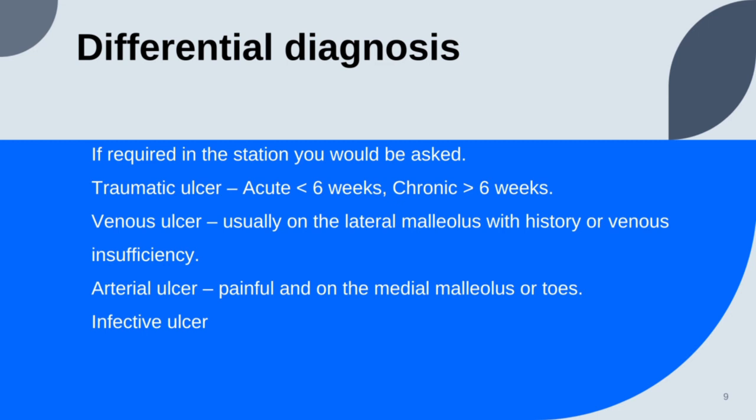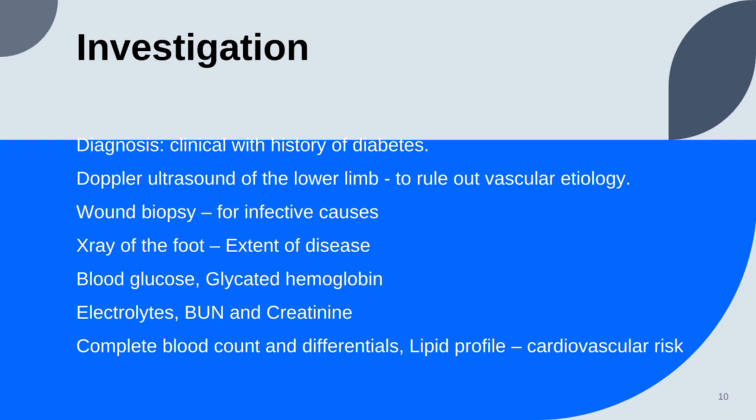Sometimes you'll be asked about differential diagnoses, but it's very uncommon. Usually these may include traumatic ulcers, venous ulcers, and arterial ulcers, and ruling these out requires both history and investigations. Investigations are usually not required because diabetic foot is a clinical diagnosis. However, to rule out other etiologies, you may want to do a Doppler scan for vascular etiology or a wound biopsy for infective cause. To check the extent of disease, do an X-ray to rule out osteomyelitis, screen the patient to check for blood sugar control, check for renal involvement, and also assess cardiovascular risk.